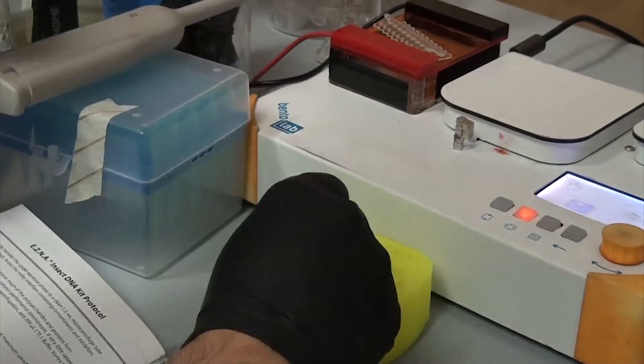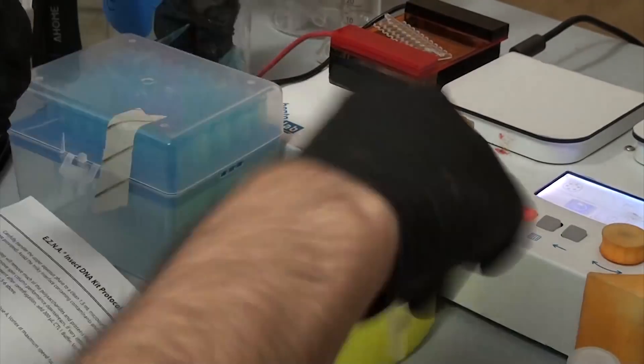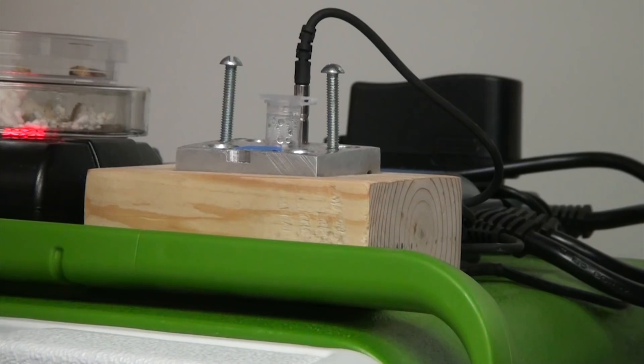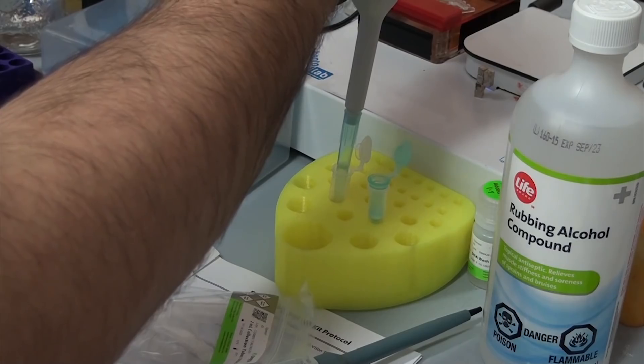To our now clean solution, we add some RNAse-A and HBC buffer and incubate at 70 degrees Celsius for 10 minutes. This will destroy any RNA while also deactivating any proteins that stuck around. Then we add ethanol before loading it into the same sort of filter and tube setup as before.